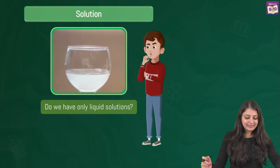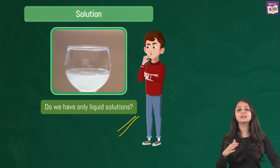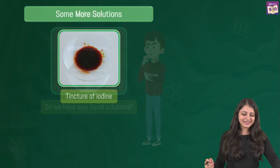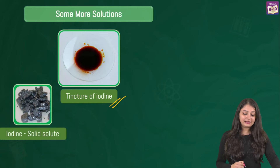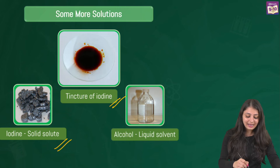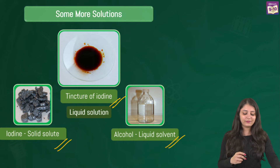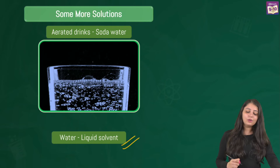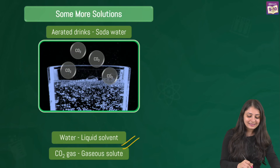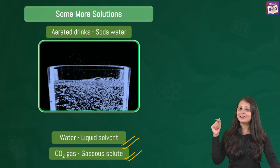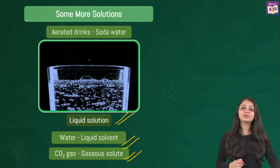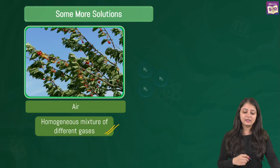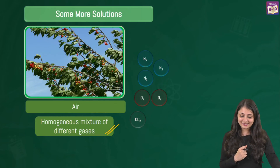Do we always have liquid solutions? Not always. In tincture of iodine, iodine is the solid solute and alcohol is the liquid solvent — that's a liquid solution. In aerated drinks, the solvent is liquid water and the solute is gaseous carbon dioxide — also a liquid solution. The solvent being liquid defines these as liquid solutions.